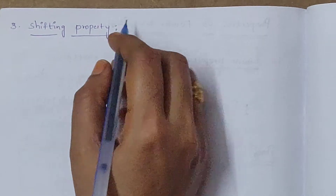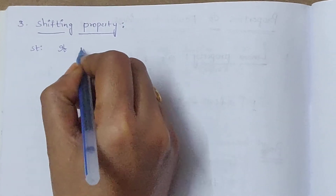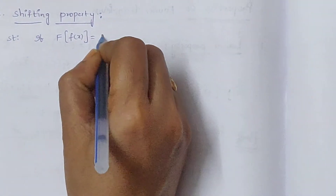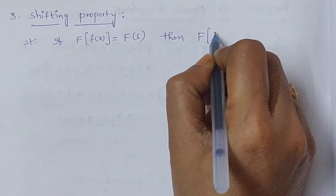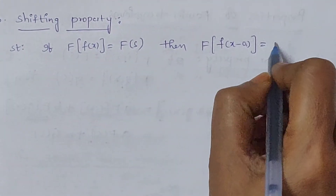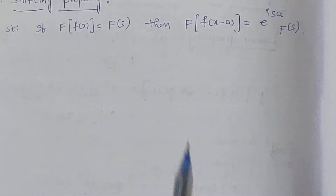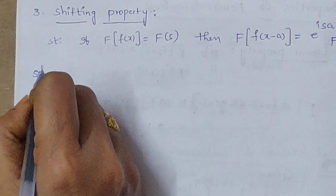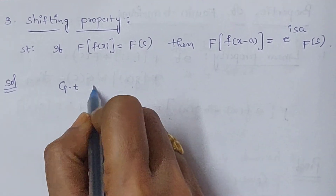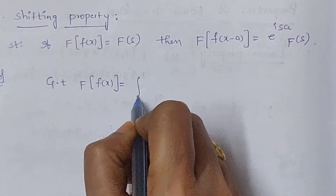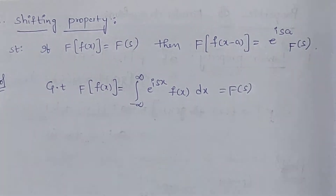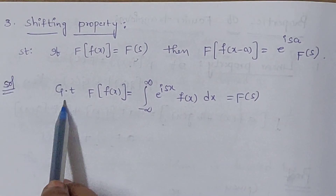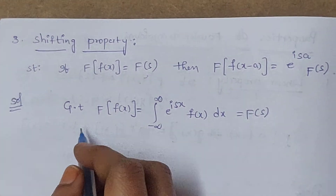The third property is the shifting property. Its statement is: if the Fourier transform of the function f of x exists and equals capital F of s, then the Fourier transform of f of x minus a equals e power isa times capital F of s. The given information is: Fourier transform of f of x equals the integral from minus infinity to infinity of e power isx times f of x dx, that is capital F of s. We have to get the Fourier transform of f of x minus a equal to e power isa times F of s.